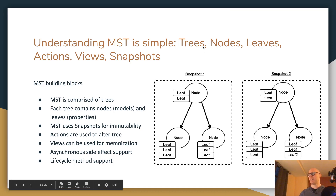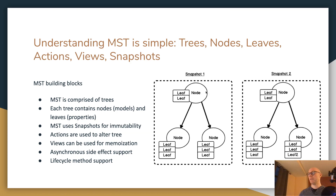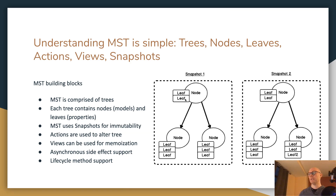Looking at the diagram: trees, nodes, and leaves. This group of nodes and leaves inside the rounded square is considered a tree. Each node will contain several leaves. So trees contain a group of nodes, and nodes contain either leaves or pointers to other nodes. A snapshot is a point in time of your tree — when your tree is initially created, that will be your first snapshot.